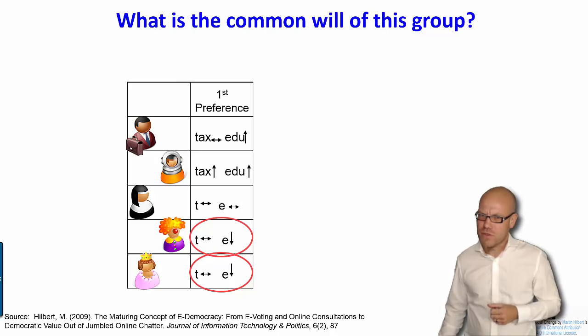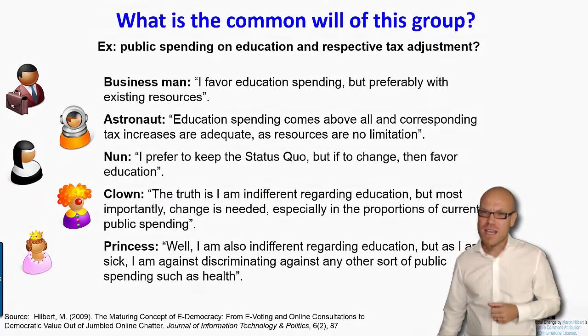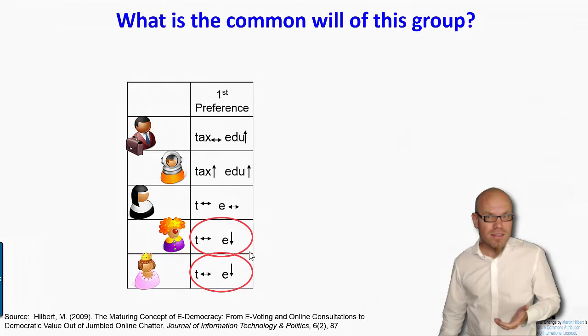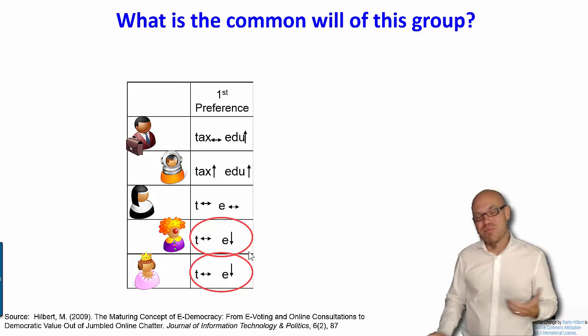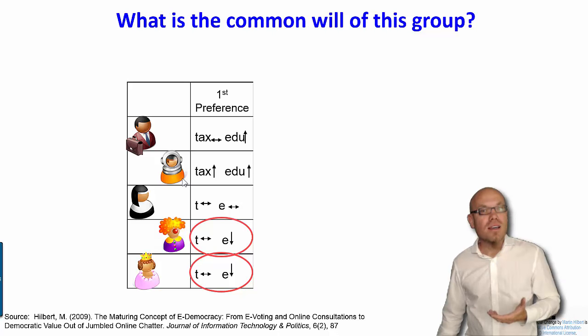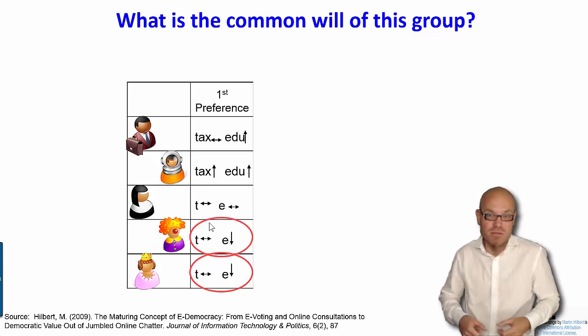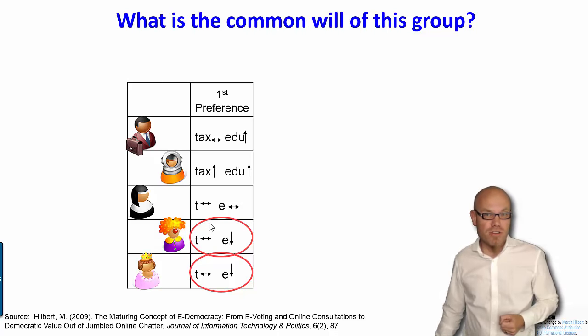Now, if you remember from the previous slide, actually, the clown and the princess, they've been quite indifferent. Both of them being quite indifferent, but they now rule the day. That is usually known as the tyranny of the silent majority. The other ones have very strong feeling about it, but they cannot agree on a solution if you put it in these simple terms, up or down, only expressing the first preference.